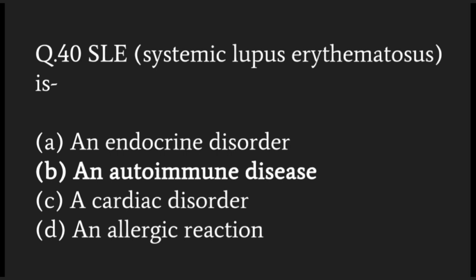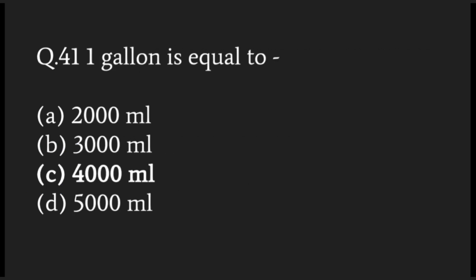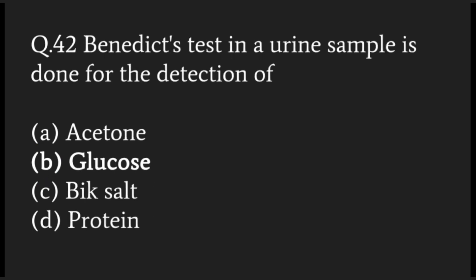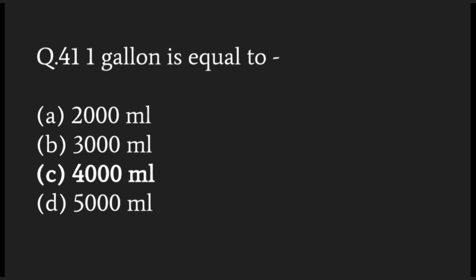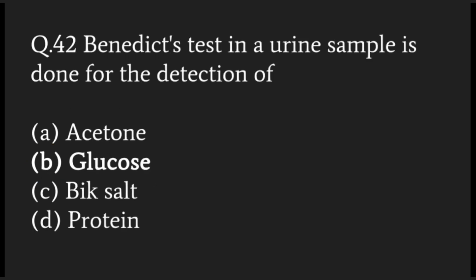SLE — systemic lupus erythematosus — is an autoimmune disorder of connective tissue. One gallon is equal to 4000 ml, that is 4 liters. The Benedict test on a urine sample is done for the detection of glucose.